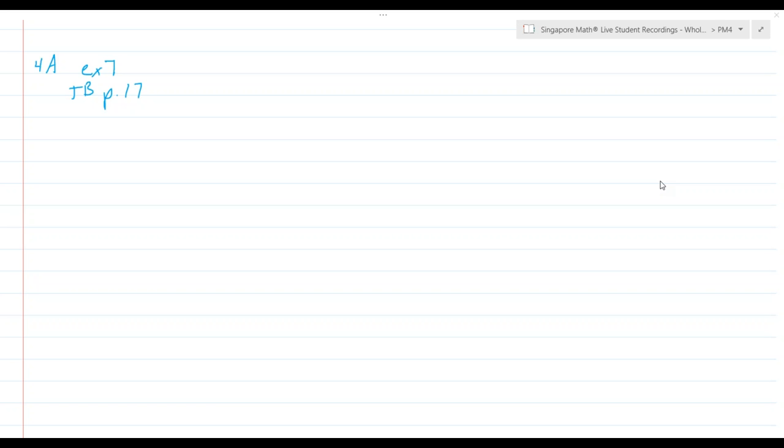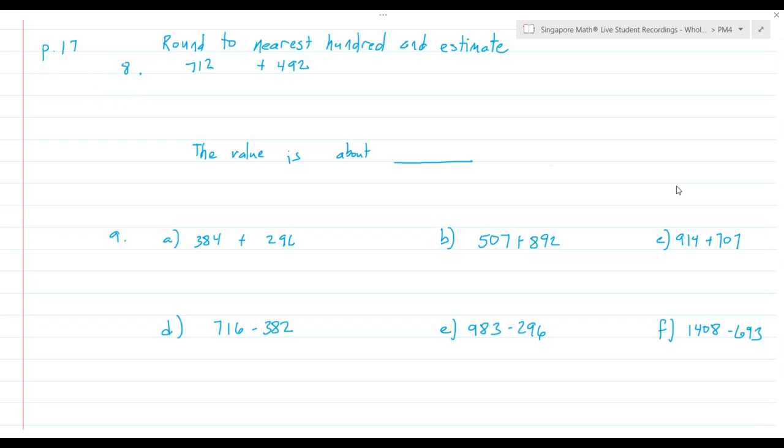Today we're going to talk about Workbook 4A, Exercise 7. This is in the textbook on page 17. We're going to use the skills that we have learned when we started talking about rounding, and we'll actually do some math with it to find an estimation.